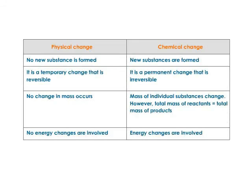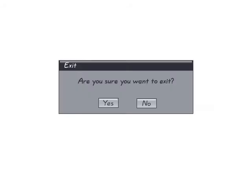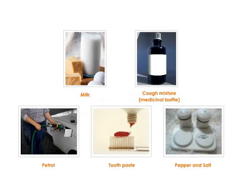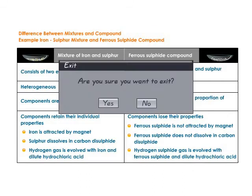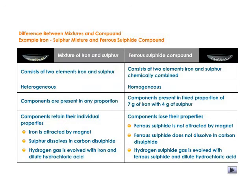Differences between physical and chemical changes: the table illustrates the differences between physical and chemical changes. The differences between mixtures and compounds, with reference to the iron-sulfur mixture and the compound ferrous sulfide, are also tabulated here.